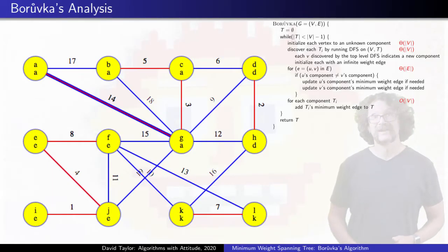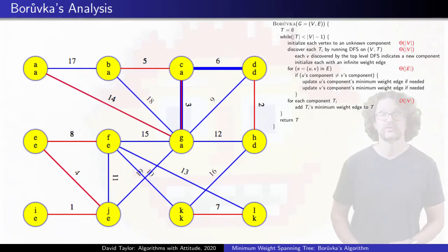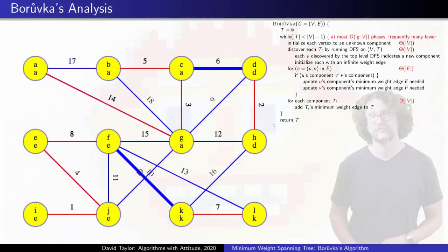Each phase has no more than half as many components as the previous one, so we get at most log V phases for worst case order E log V runtime. But unlike Kruskal's algorithm, where sorting really usually does take E log V time, you might end up with a lot fewer phases here.